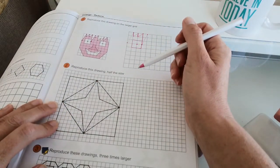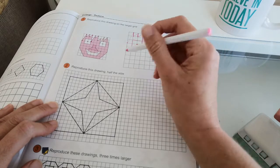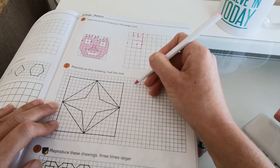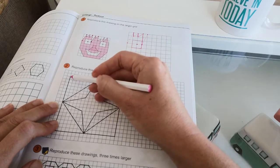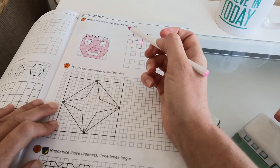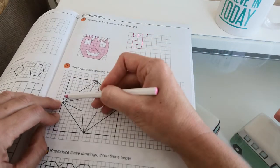Moving on to number two, reproduce this drawing half the size. This means that each square in your new drawing will represent the length of two squares here because you have to half the size of the drawing.